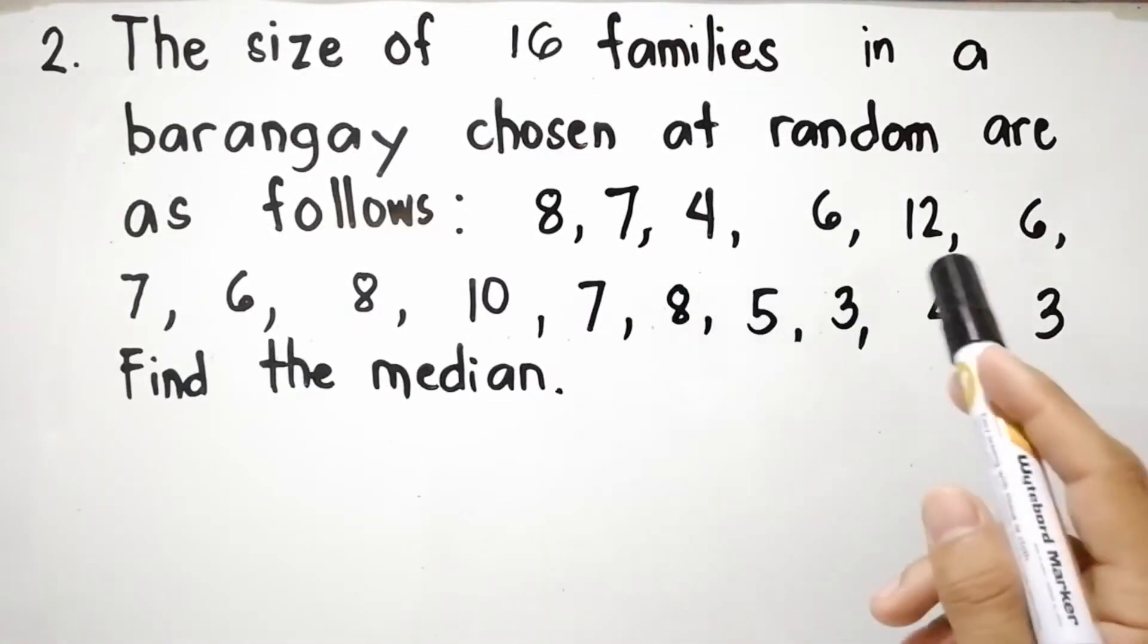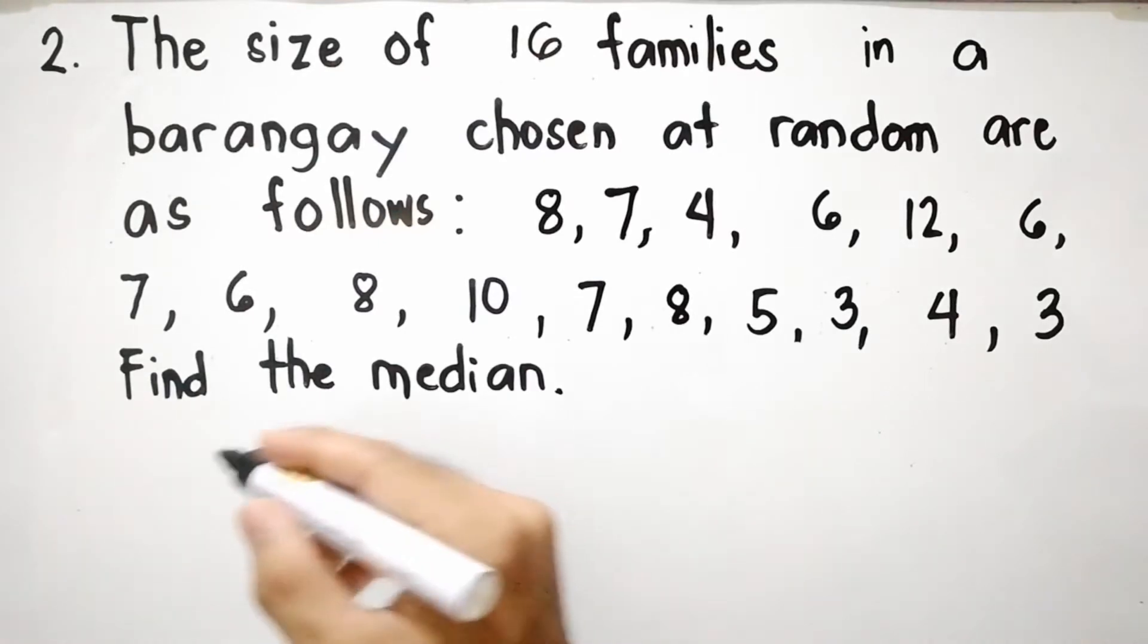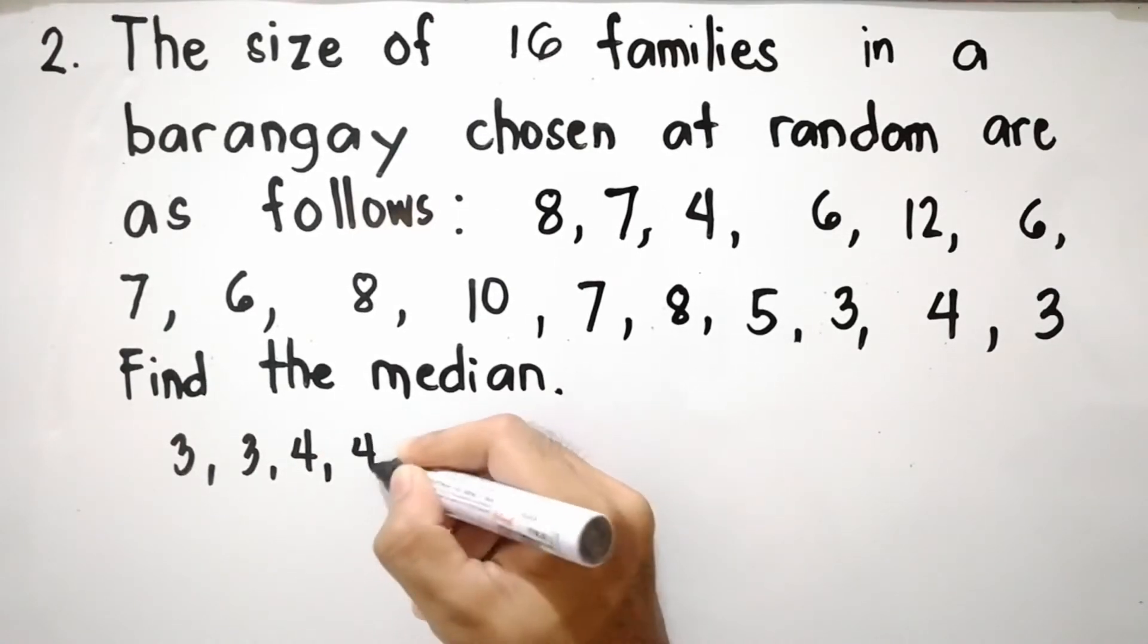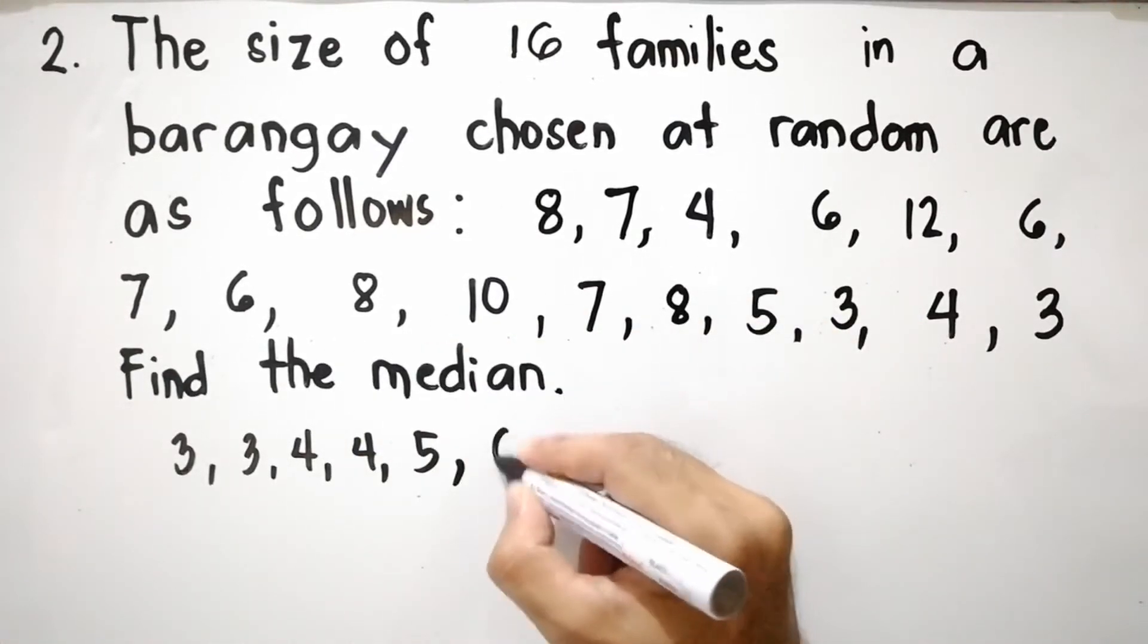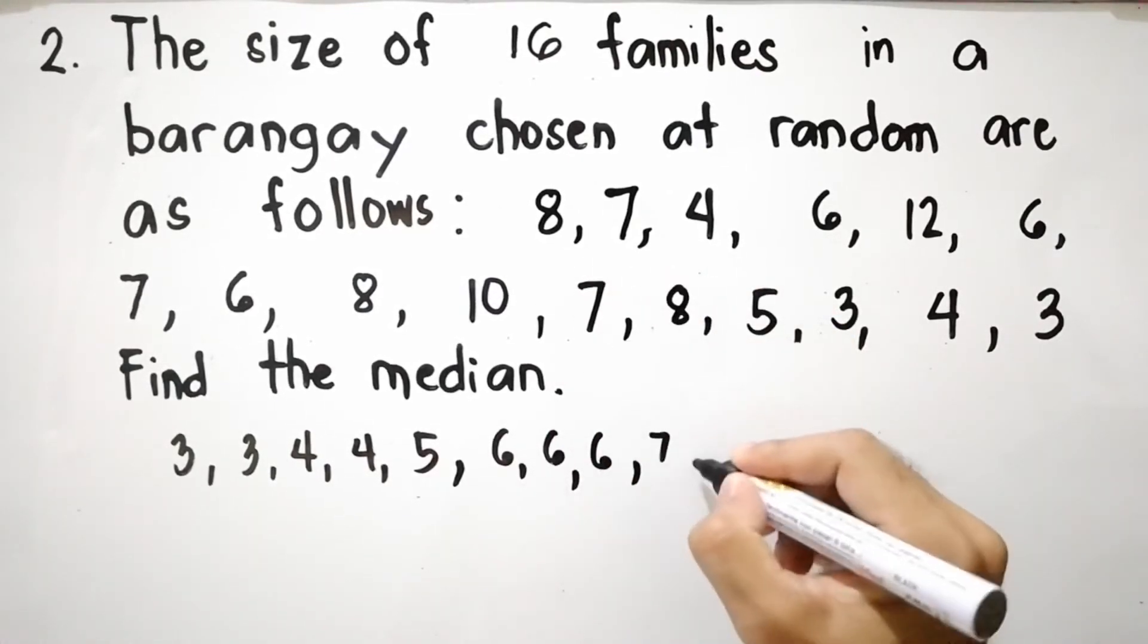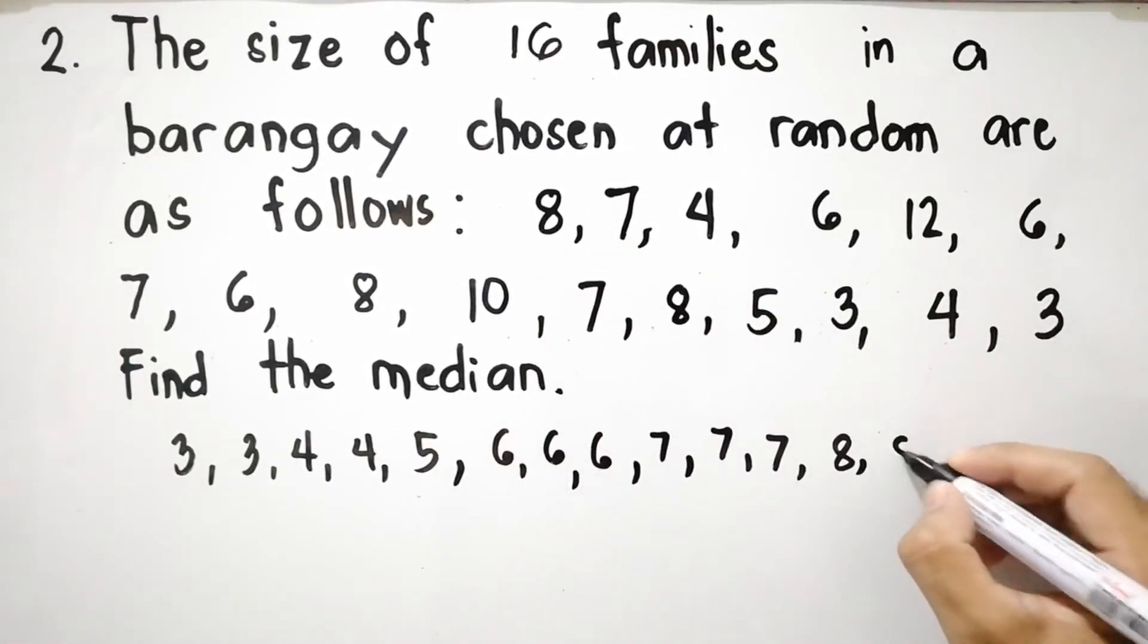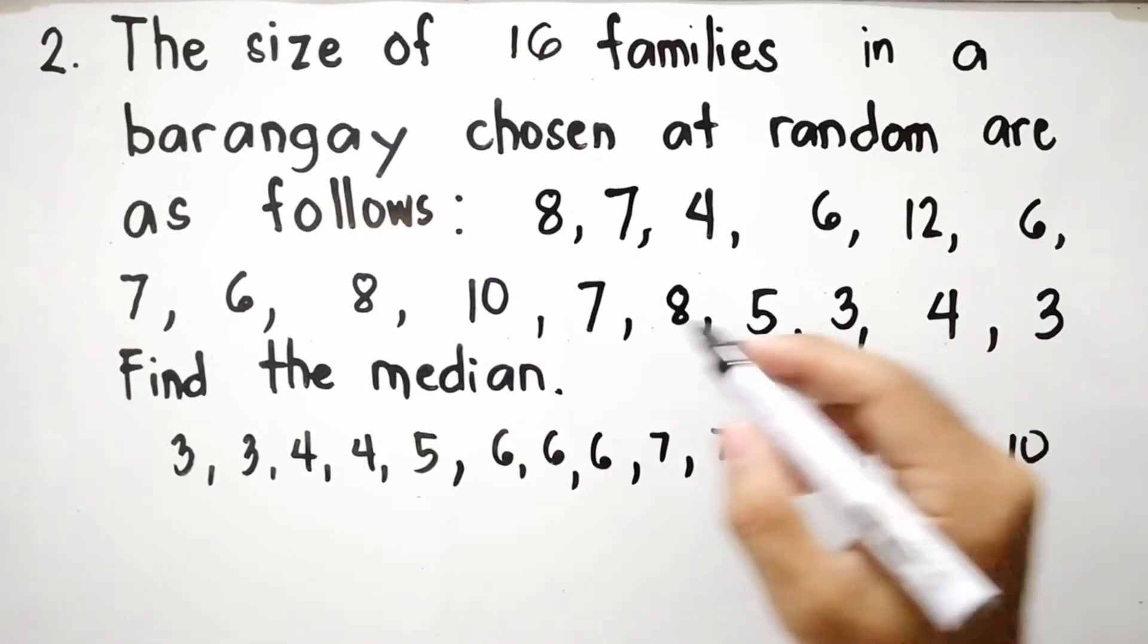The first step is to arrange the size of the family in ascending order. Let us start with 3, another 3, 4, another 4, 5, then 6, another 6, another 6, 7, another 7, another 7, 8, another 8, another 8, 10, then 12.